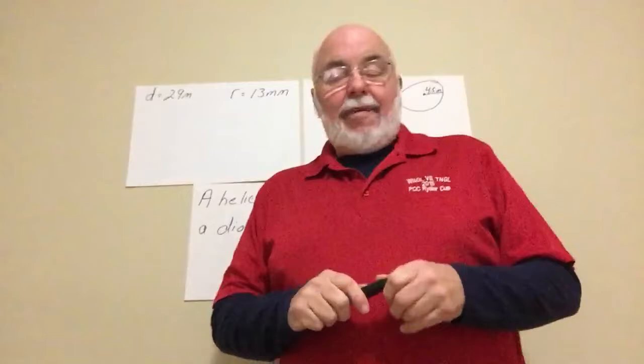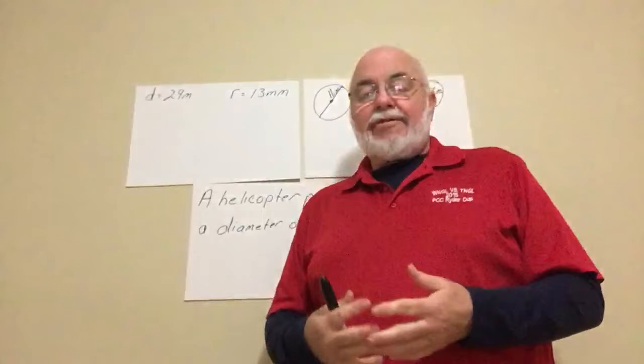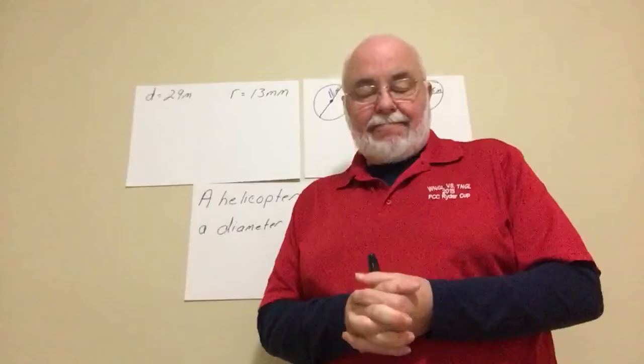So we're going to use two different formulas to find the circumference. Remember, one is circumference equals pi times diameter, or circumference equals two times the radius times pi.